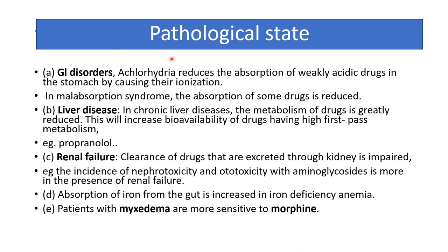Pathological state: in GI disorders, achlorhydria reduces absorption of weakly acidic drugs in the stomach by causing ionization; malabsorption syndrome reduces absorption of some drugs. In chronic liver disease, metabolism of certain drugs is greatly reduced, increasing availability of high first-pass metabolism drugs like propranolol. In renal failure, clearance of renally excreted drugs is impaired; for example, nephrotoxicity with aminoglycosides is increased. Absorption of iron is increased in iron deficiency anemia, and patients with myxedema are more sensitive to morphine.